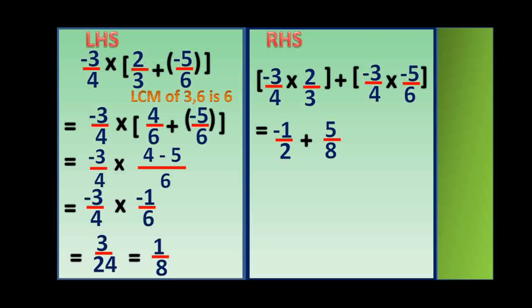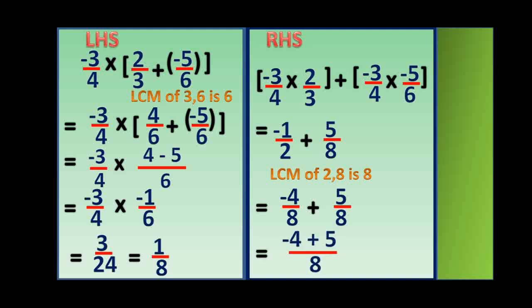Now you can see the denominators are different and we have to add them. So here we have to take the LCM of 2 and 8. The LCM of 2 and 8 is 8. The equivalent rational number of minus 1 by 2 with 8 as denominator is minus 4 by 8. So minus 4 by 8 plus 5 by 8 equals minus 4 plus 5 by 8. Minus 4 plus 5 gives 1, so the answer is 1 by 8. Both the left hand side and right hand side answers are the same, so LHS is equal to RHS. It is proved.